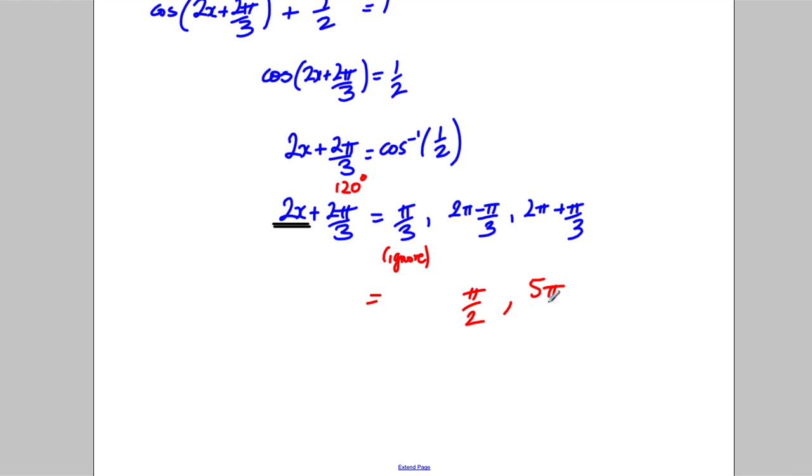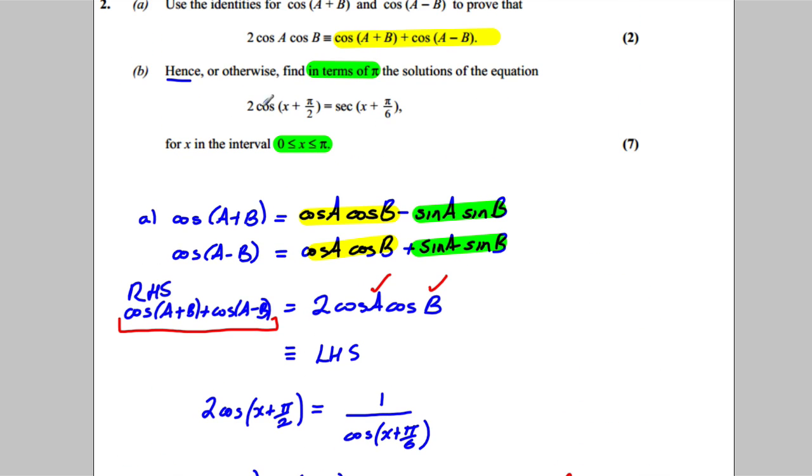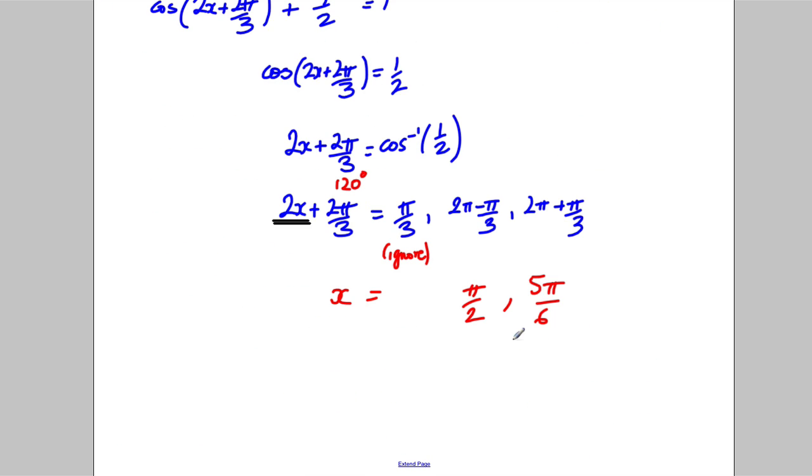So these two things here are my answers for x. Obviously then it would be a great idea to put them back into these two here and check that they actually are equal, and also check that they're between 0 and pi. And indeed they are, so we're done.